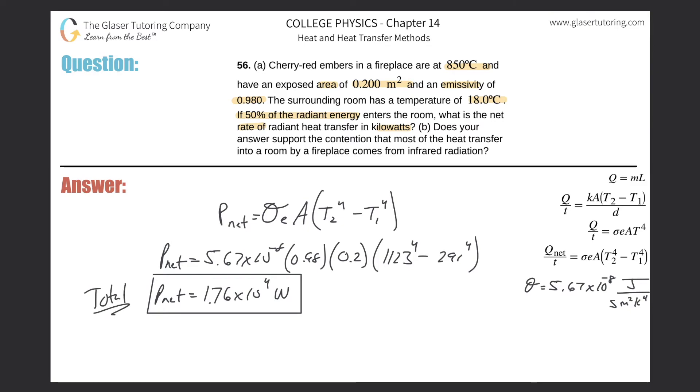Now they said if 50% of it is entering the room. So let's just multiply this thing by 0.5 to find half of it, or 50%. So what do we get? We get about 8.80 times 10 raised to the third watts. So that's the amount entering the room.